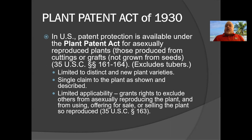The original utility patent law was not covering certain things people wanted to protect as intellectual property, particularly plants. There is nothing under the original utility patent law that says you can protect a living thing. The first living-things patent was the Plant Patent Act of 1930, and this was only for asexually reproduced plants — those produced from cuttings or grafts and not grown from seed. It excludes tubers, which includes potatoes.